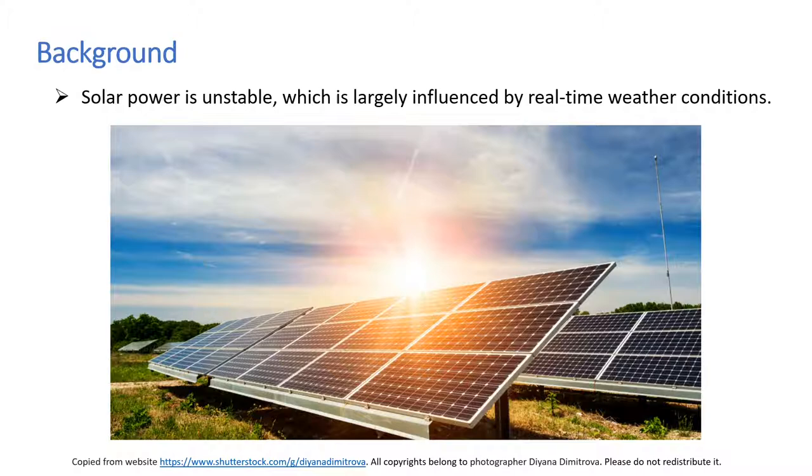However, solar power is unstable because it is largely influenced by real-time weather conditions. And since solar power is mainly determined by solar irradiance, in order to maintain the stability of the power grid system, the prediction of solar irradiance becomes an important task.